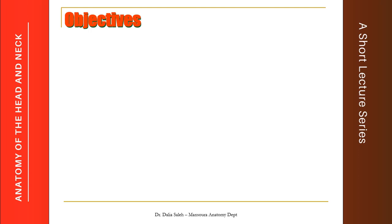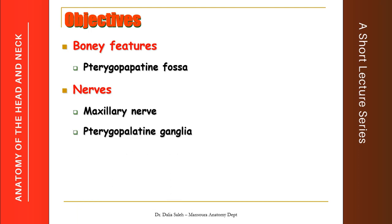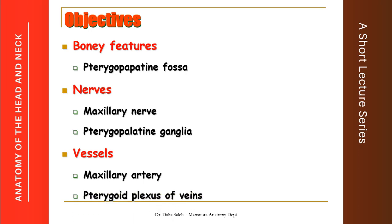In the first part of this presentation, I'm going to talk about the bony features of the pterygopalatine fossa regarding its walls, connections, and contents. Then, in a coming video, I'm going to talk about the nerves that lie there, namely the maxillary nerve — its origin, course, and branches — and also the pterygopalatine ganglion, which is the largest autonomic ganglia in the Head and Neck. Then, in the last part of the presentation, I will talk about the vessels which lie in the pterygopalatine fossa, namely the maxillary artery and the pterygoid plexus of veins.